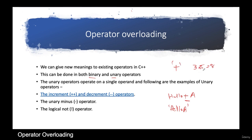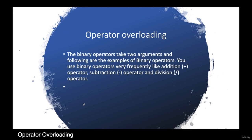Operator overloading can be done with both binary and unary operators. A binary operator takes two operands — plus is binary because '3 + 5' has two arguments. Unary operators operate on a single operand, such as the increment operator (i++), decrement (i--), and logical NOT. For example, if i is 5, i++ increments it to 6 with only one operand.